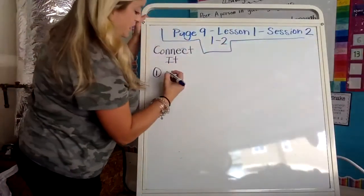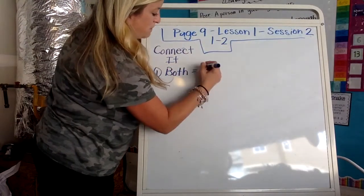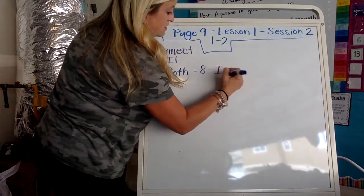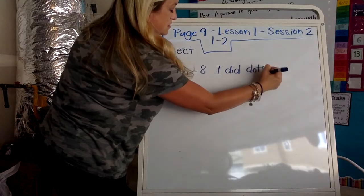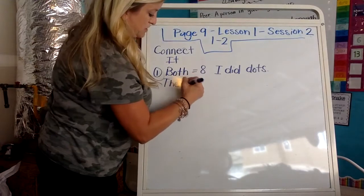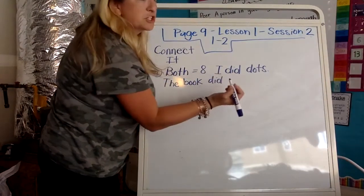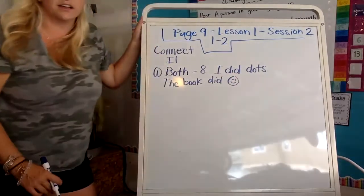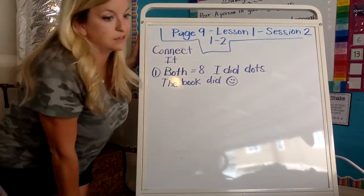So mine was dots and some were filled in and some were not. These, they have lighter happy faces and darker happy faces. Maybe it's a different color. So number one says, how is your way like model it? How is it different? So I would say, both equal eight. And then I would say, I did dots. The book did smiley faces. That tells how it was like. And it tells how it was different.